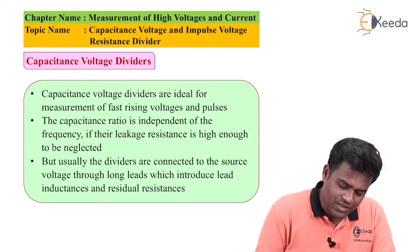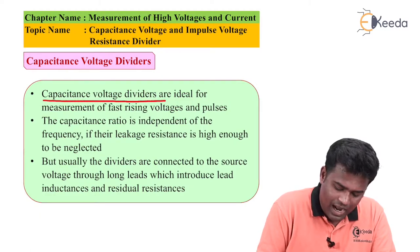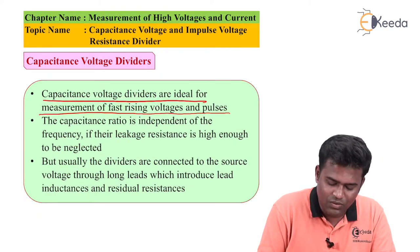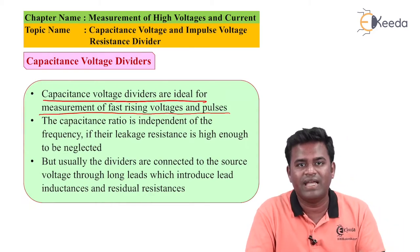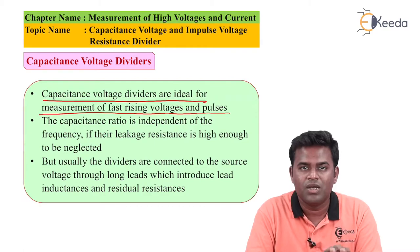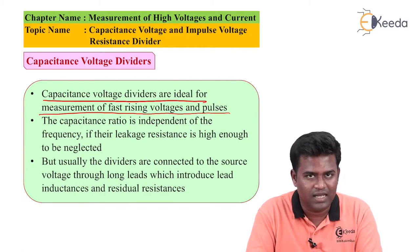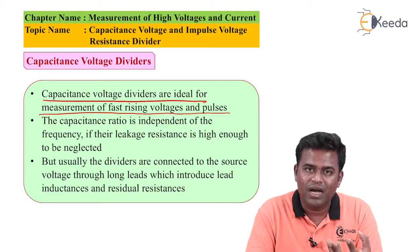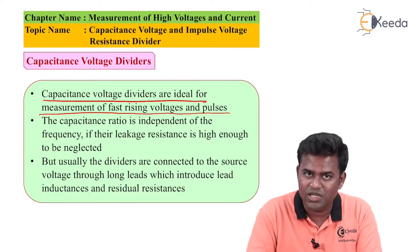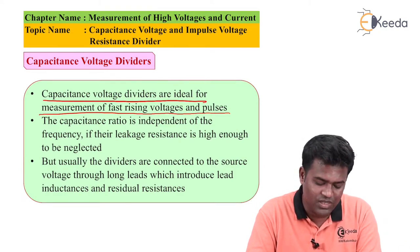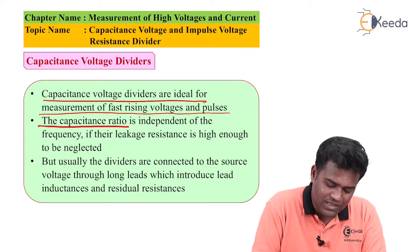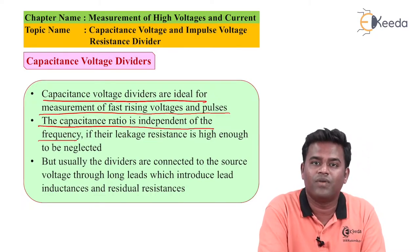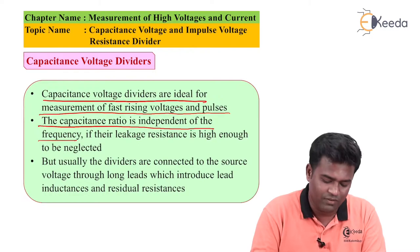The capacitance voltage dividers are ideal for measurement of fast rising voltages and pulses. In a system when there will be disturbances, pulses are created. The transients in the system unbalance the voltage so rising voltage occurs, and that is when we use a capacitance voltage divider. In that case, the capacitance ratio is independent of frequency — it does not depend on frequency.